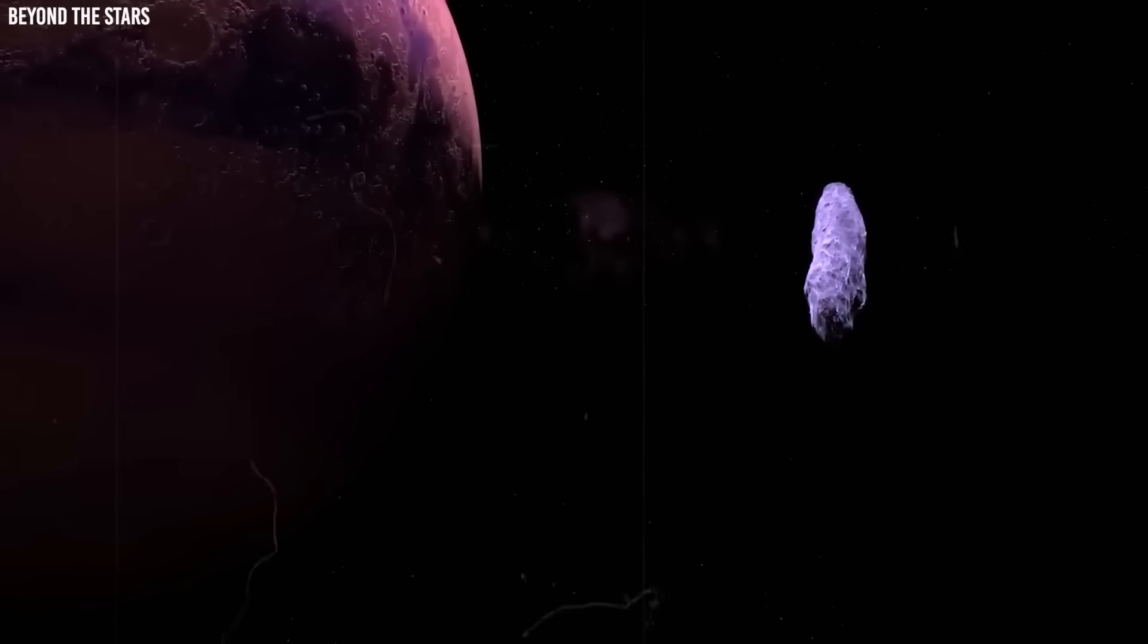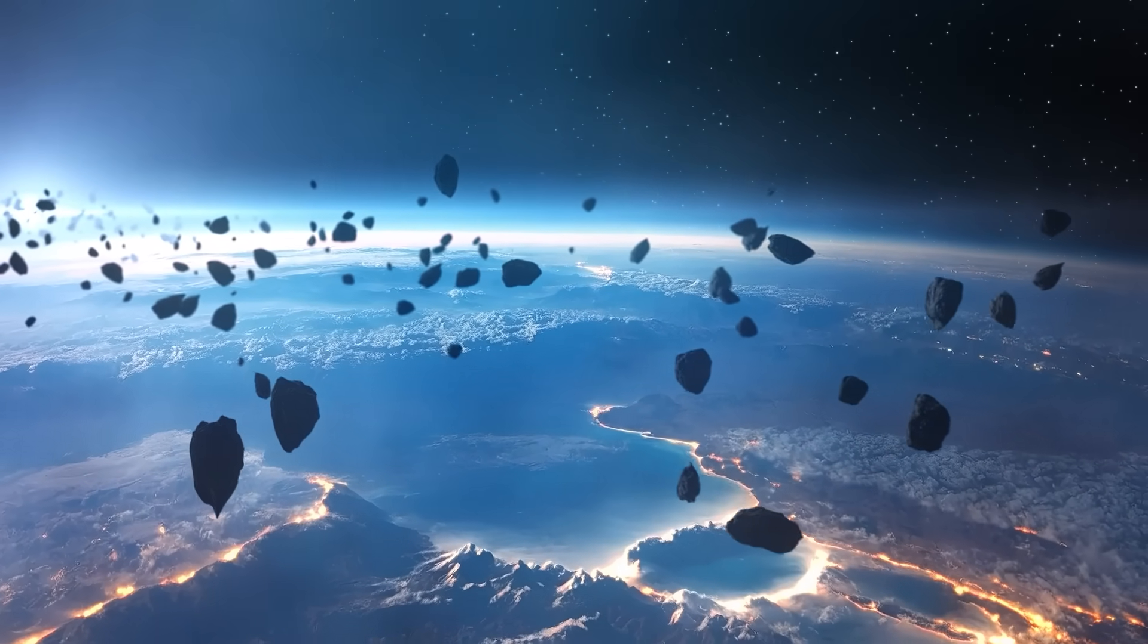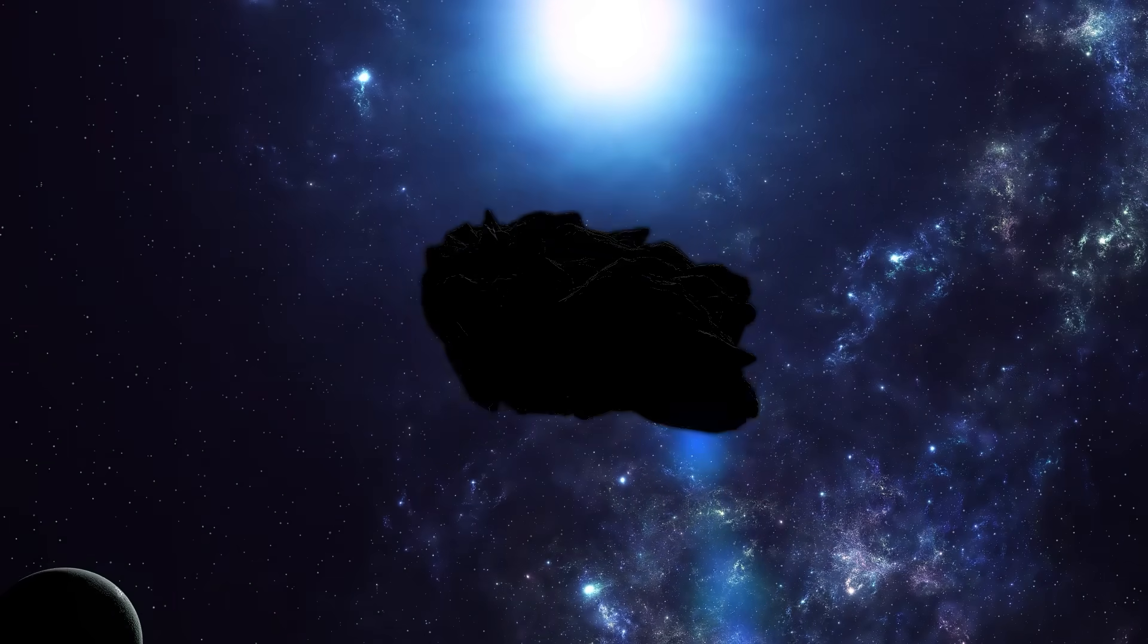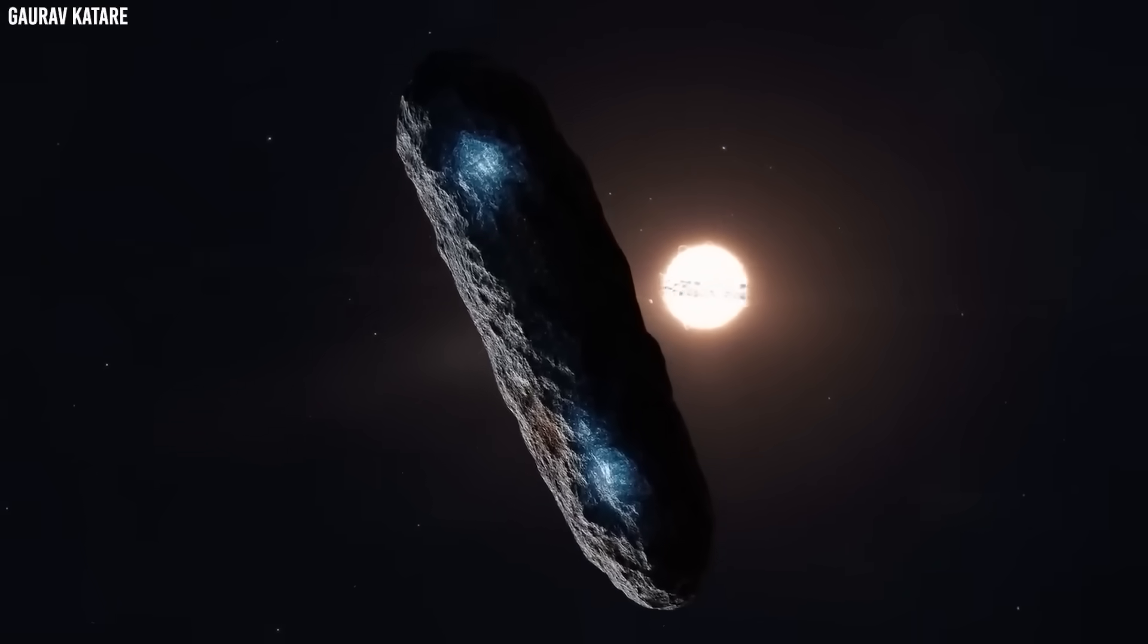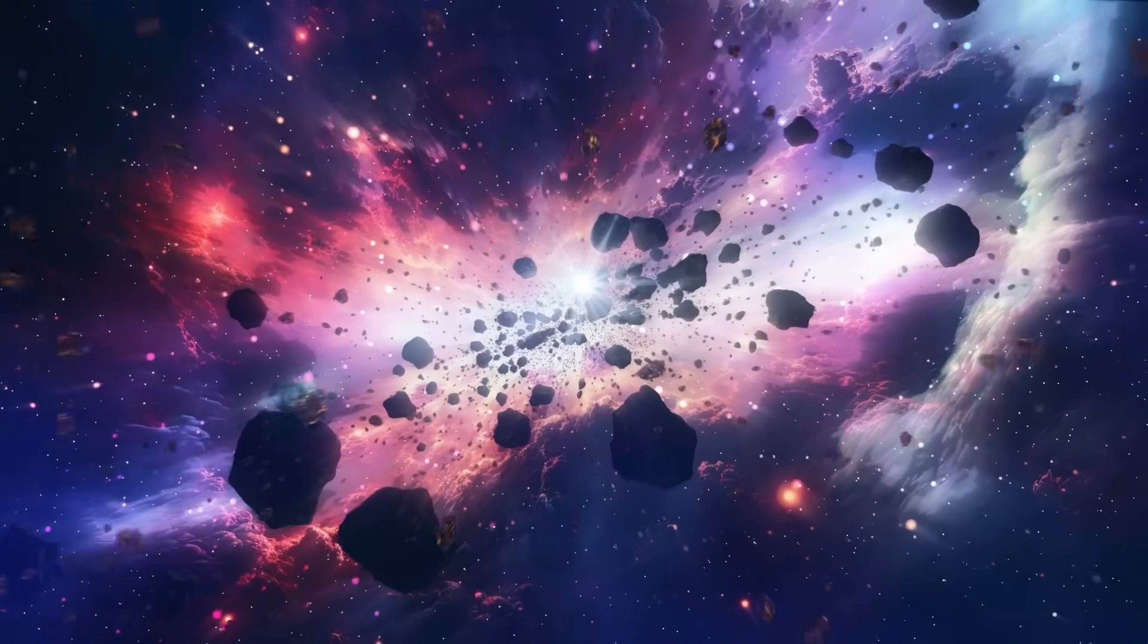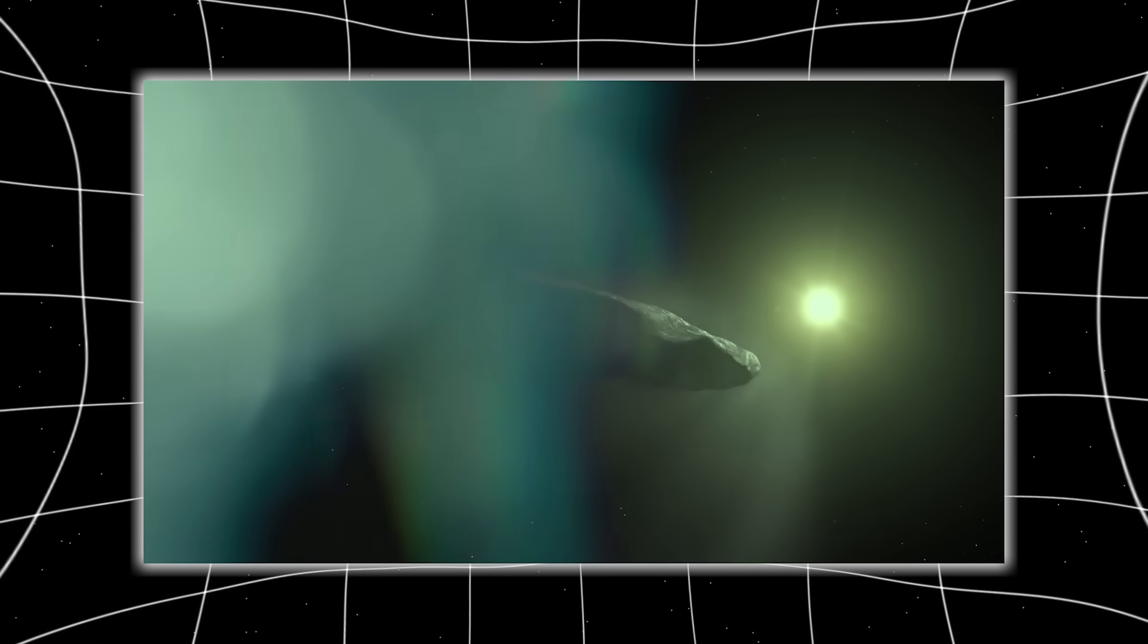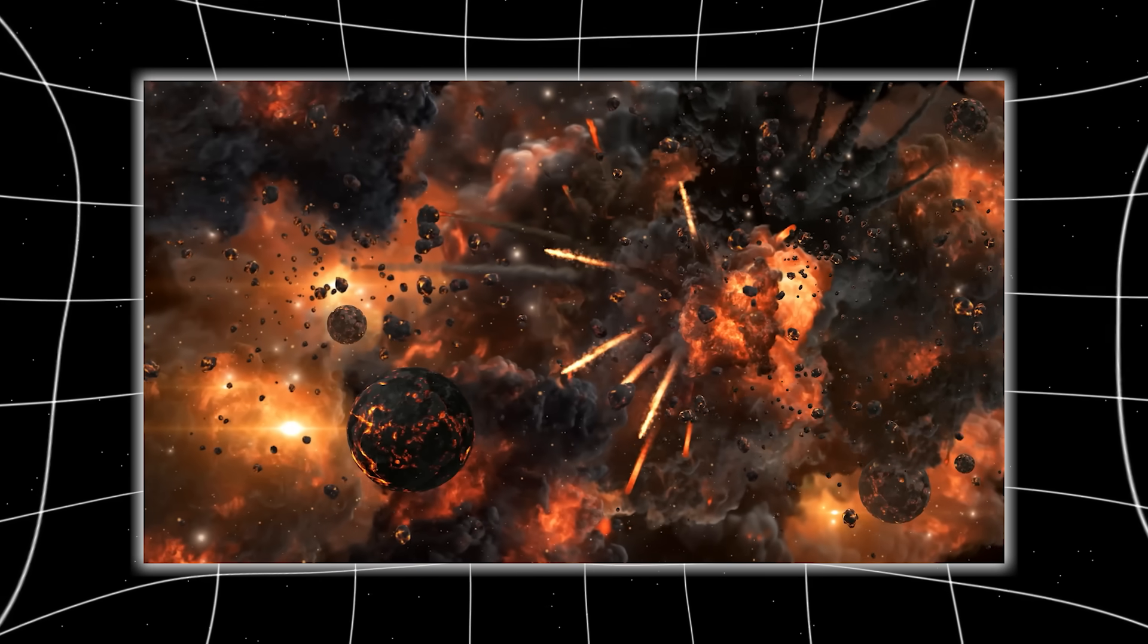Instead, what we see looks coordinated, precise, almost choreographed, as if the object didn't fragment because it failed, but because it completed something. Think about that. A comet from another star system, older than any civilization Earth has ever known, enters our solar system carrying strange chemistry, impossible acceleration, organized jets, and a structure that defies every natural explanation. And then, at the exact moment when its mass loss calculations break physics, it splits into 16 pieces, not 15, not 20, 16, the exact number needed to match the surface area problem that had baffled astronomers for weeks. It's as if the universe were solving its own equation, and once you see the pattern, you cannot unsee it.